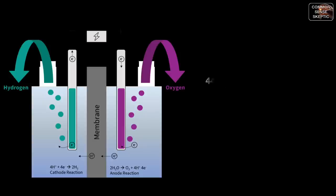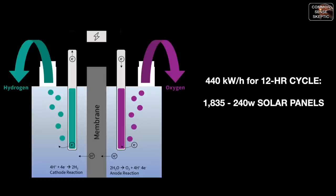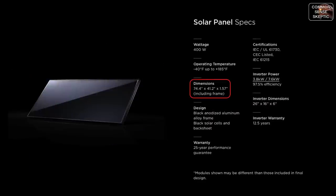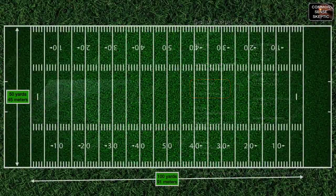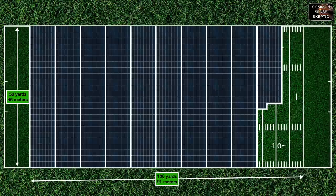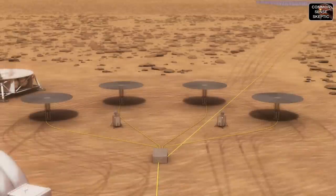That's 440 kilowatts per hour for a 12-hour cycle, requiring 1835 solar panels — assuming they would always produce peak power during the day. At 21.3 square feet (2 square meters) per panel, that's a minimum footprint just for the panels of 3,670 square meters, or roughly one acre, weighing approximately 44 tons.